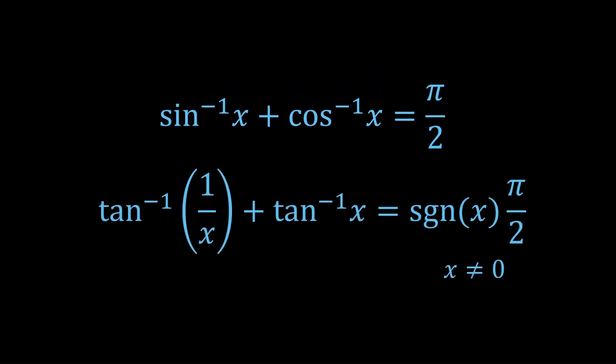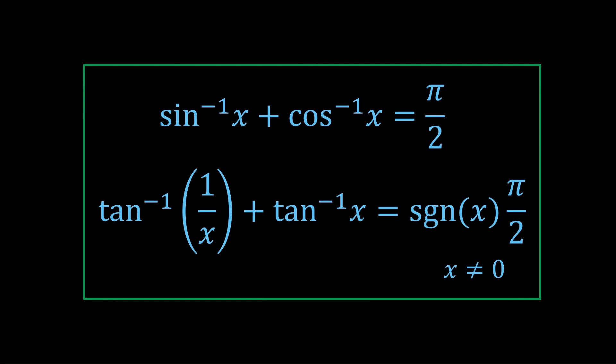You can do a similar thing for the function tan inverse 1 on x plus tan inverse x, and that would give you this formula. Don't be scared by the sgn, it just means sine, s-i-g-n. Basically, the sine of a positive number is 1, and the sine of a negative number is minus 1.